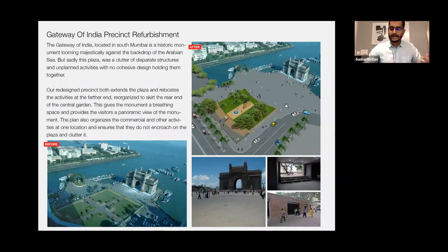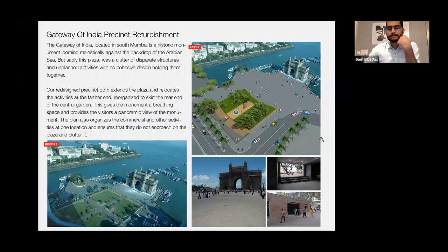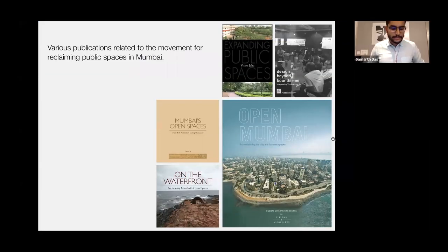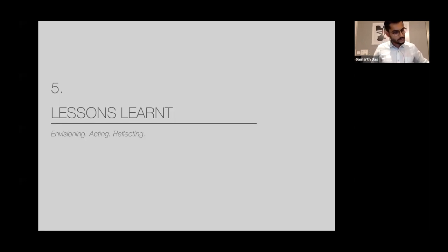The Gateway of India precinct — an iconic monument located in South Mumbai — was sadly a clutter of disparate structures and unplanned activities with no cohesive design holding them together. This project really opened up the entire space for the monument. Several other projects across the city dealt with natural assets of wetlands and mud flats, showing how we can very sensitively intervene in these spaces. Through the movement, there have been several publications that we have developed and published to support this movement — all available on our website. These are always byproducts of the movement.